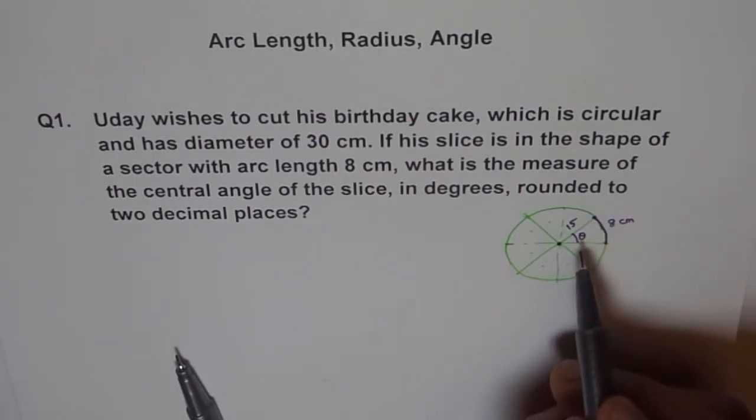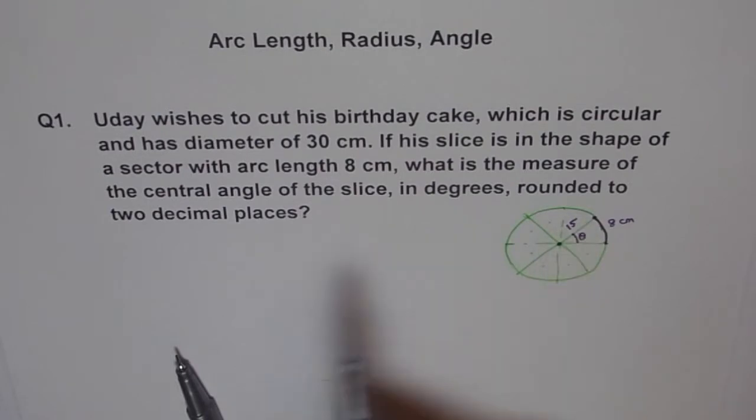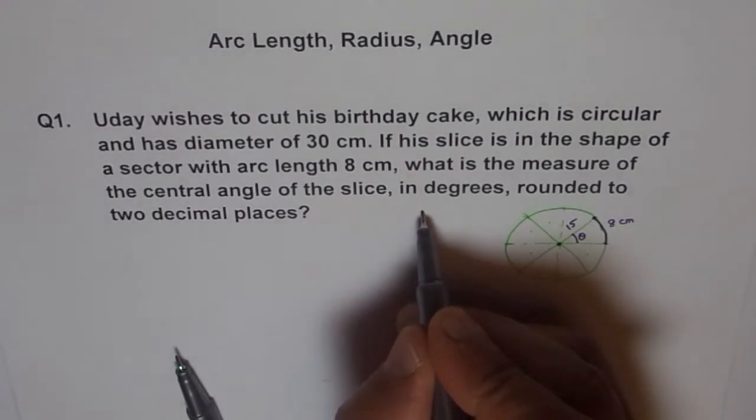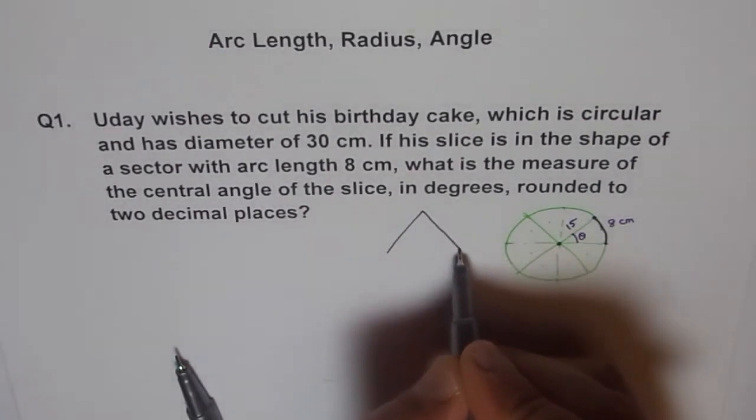So we have to find this angle in degrees. Round it to 2 decimal places. So that's our problem. Now how to solve it? We remember our triangle. How is arc length related with radius?